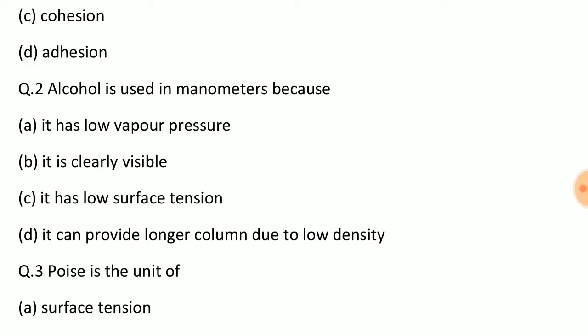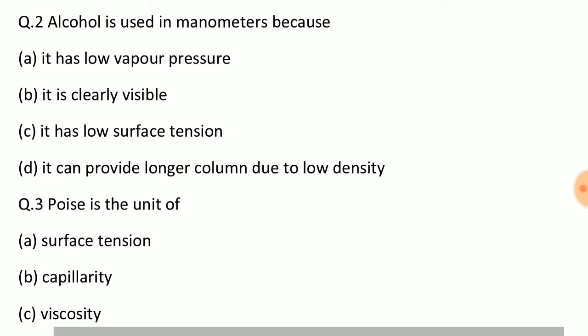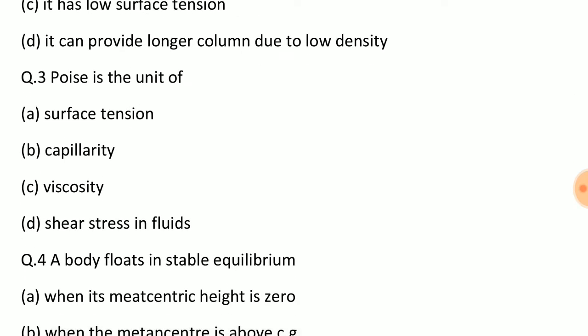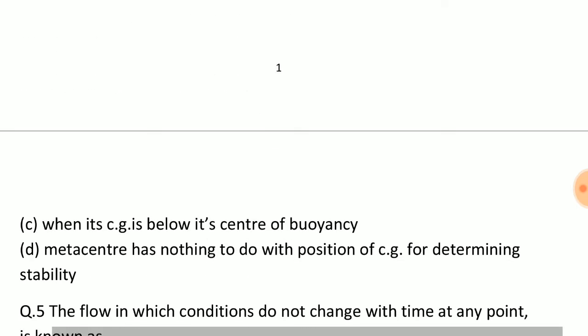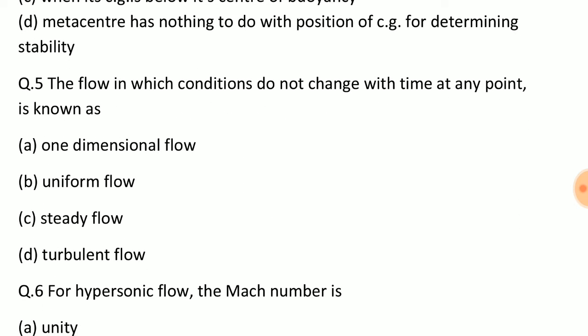Question: Alcohol is used in millimeters because? Answer: Option D, it can provide longer column due to low density. Question: What is the unit of viscosity? Answer: Option C. Question: A body floats in stable equilibrium? Answer: Option B, when the metacenter is above center of gravity.